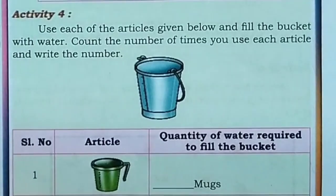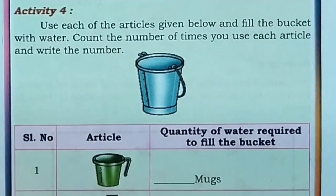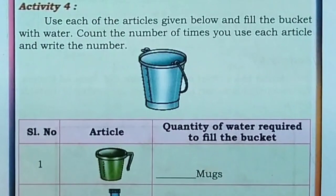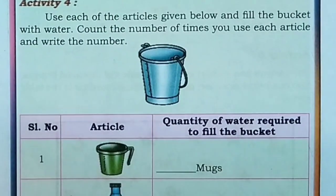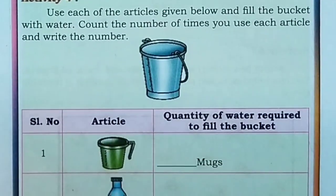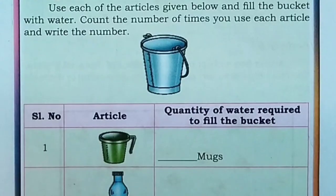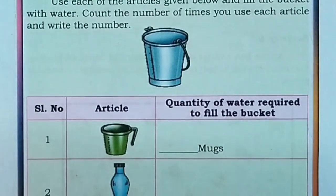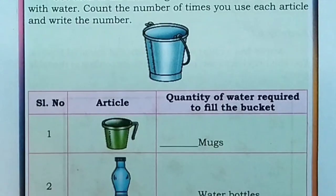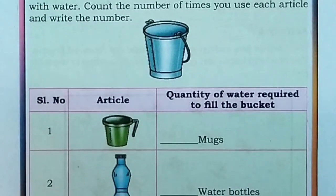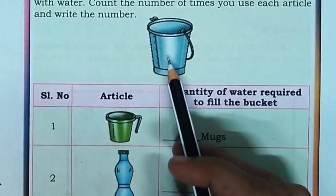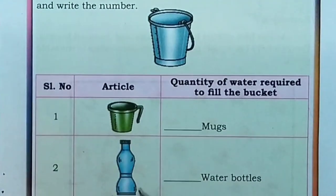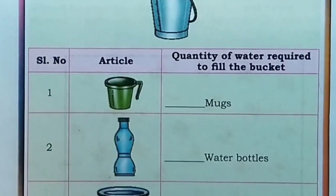Activity 4. Use each of the articles given below and fill the bucket with water. Count the number of times you use each article and write the number. Here we have to fill this bucket using a mug, water bottles, and vessels.